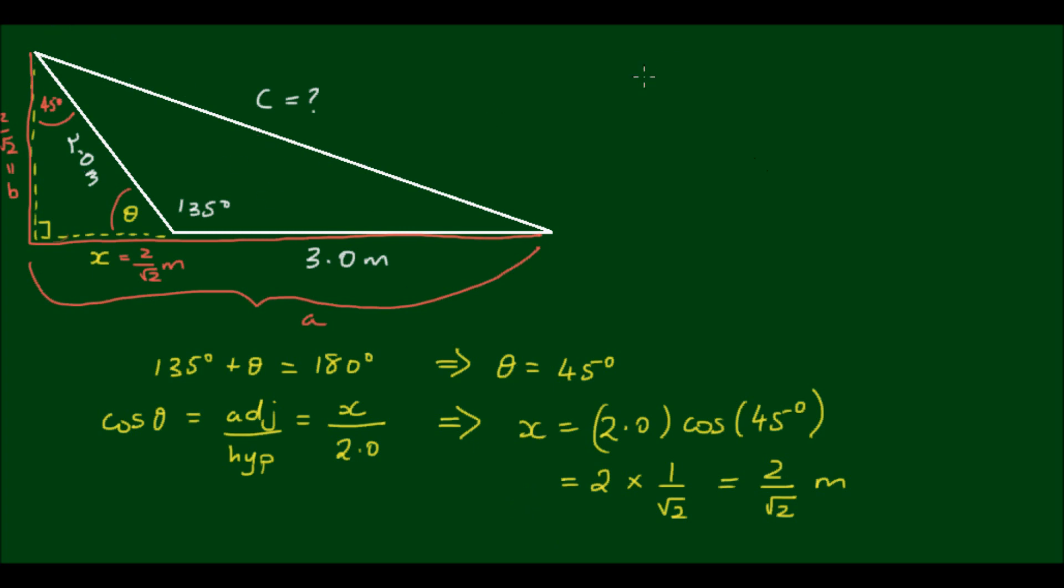Now we can apply Pythagoras' Theorem to find the long side C. Pythagoras' Theorem states that C squared equals A squared plus B squared. I know that A equals 3 plus 2 divided by root 2 meters, and that has to be squared. And B equals 2 divided by root 2 meters, which also has to be squared.